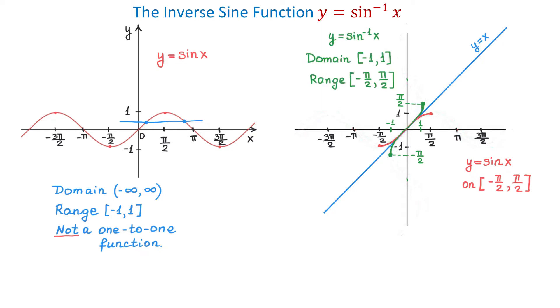The domain of the inverse sine function is the interval from negative 1 to positive 1, and the range is the interval from negative pi over 2 to positive pi over 2.